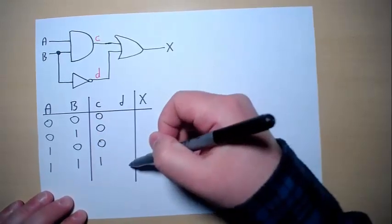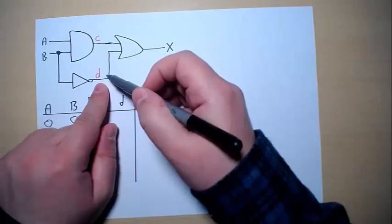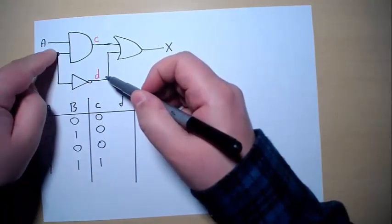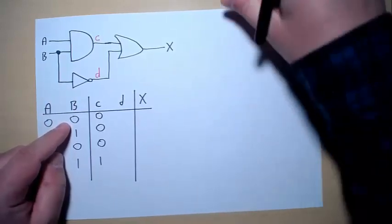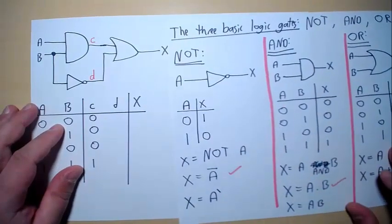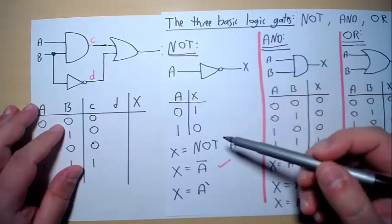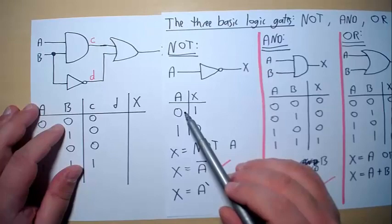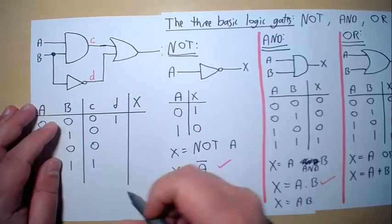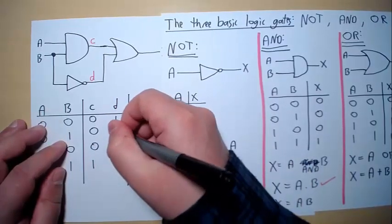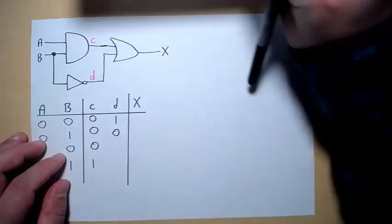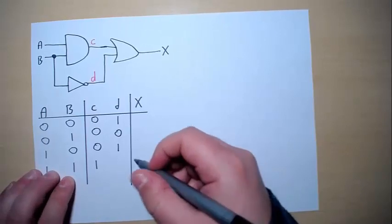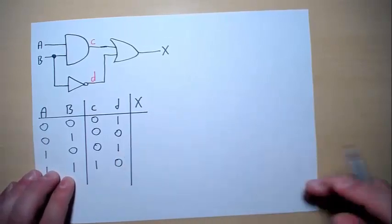Now let's do column D. D is representing the output coming out from this NOT gate and this is NOT of B. And as you know, if we have a look at the NOT gate, the NOT gate is basically an inverter gate. So if we give it a 0, it will give us a 1. If we give it a 1, it will give us a 0. So here we have a 0, so it gives us a 1. Here we have a 1, so it gives us a 0.